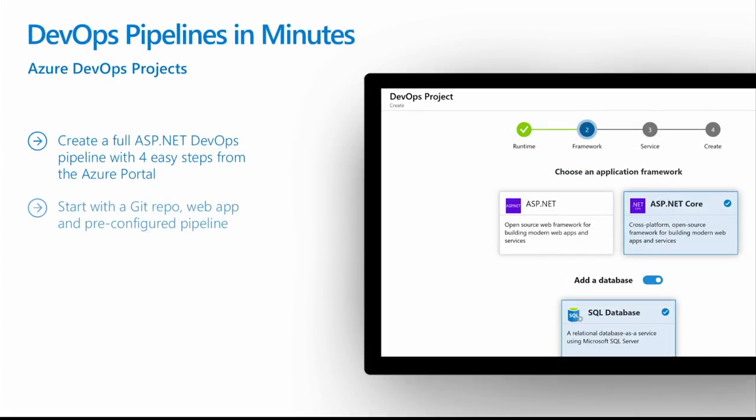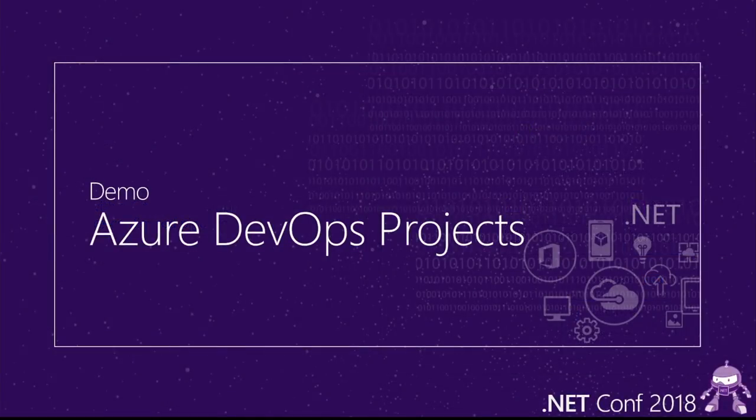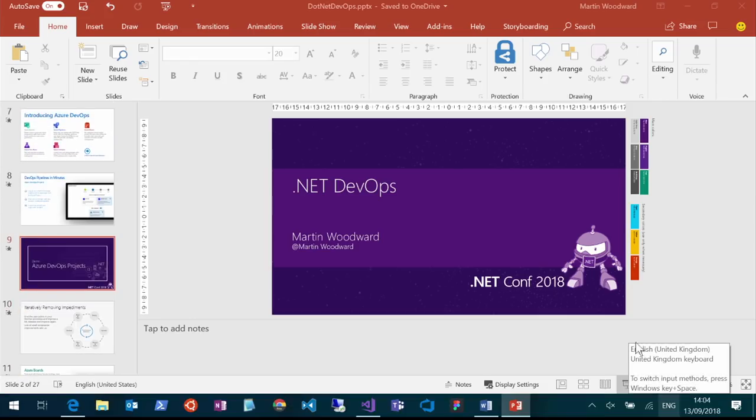If we take a look at getting started with a continuous integration and continuous deployment process, there's a cool little feature built straight into the Azure portal called Azure DevOps Projects. You can very quickly and easily set up a full end-to-end pipeline that uses the Azure DevOps services and plumbs them all together, giving you a skeleton that you can then take and customize. It's really easy to get started.